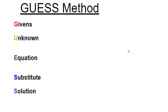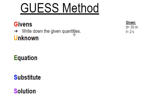The GUESS method is an acronym: G-U-E-S-S. It stands for Givens, Unknown, Equation, Substitute, and Solution. You need to know these five things, remember them in order — G, U, E, S, S — and know what each one means so you can use them for almost all of your problem solving this entire year in Physics of the Universe.